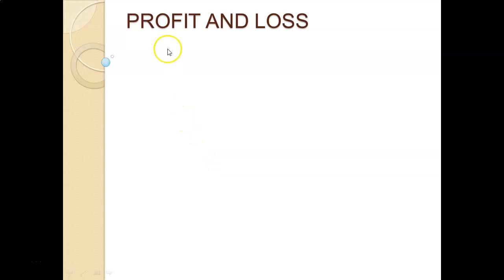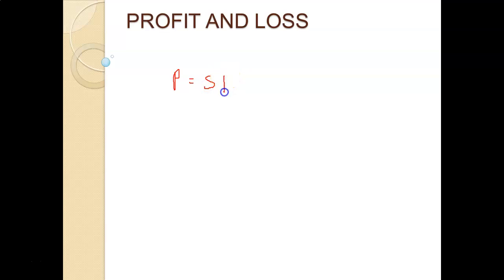What is profit and loss? Profit is nothing but selling price minus cost price. P for profit is nothing but SP minus CP. The selling price is the price at which an article is sold, and cost price is the price at which an article is purchased. Now SP is always greater than CP.